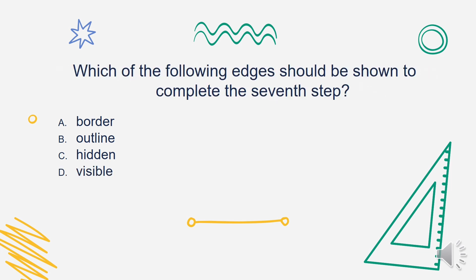Which of the following edges should be shown to complete the seventh step? Is it A. Border, B. Outline, C. Hidden, or D. Visible? The answer is Hidden. If necessary, show the hidden edges.